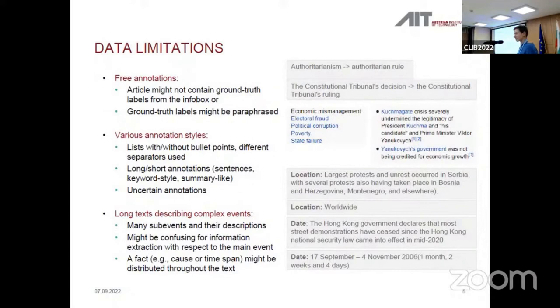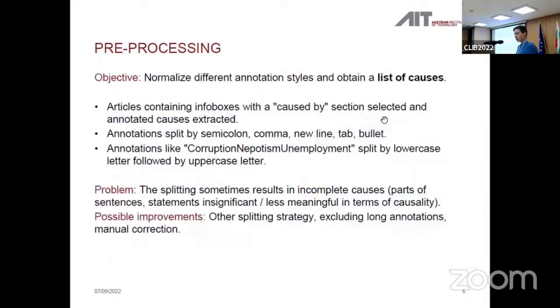The data has some limitations, of course. The annotations are maybe not very objective, because Wikipedia authors may be biased. They are also very different. They may be long, short, maybe like summarization or just bullet point lists. They may be uncertain, so we have to deal with all this stuff. In the preprocessing, we tried to create a list of causes for the particular article, and we split the annotations by semicolon, comma, newline, tab, bullet point, everything, which of course in some cases resulted in incomplete causes, statements that are insignificant in terms of causality. But it's something you can then correct manually if you have resources.